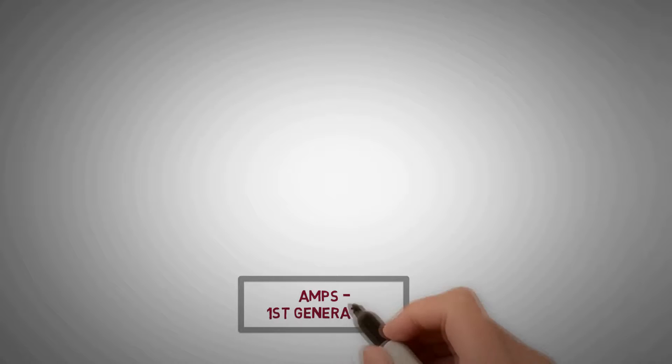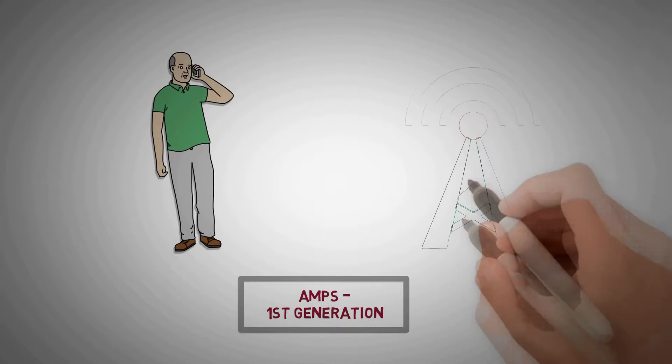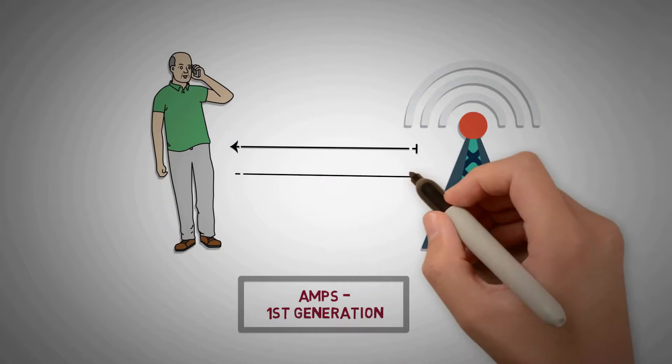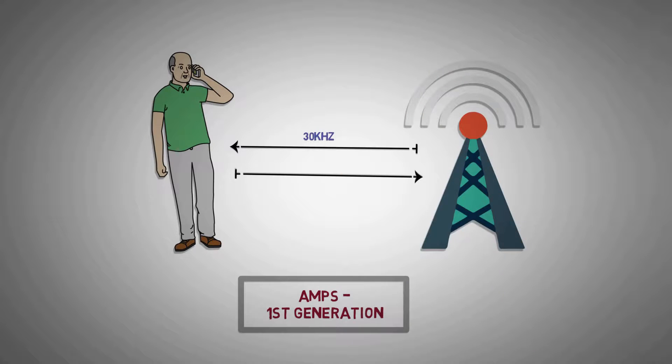AMPS or the first generation analog systems used FDMA to provide each user a duplex channel with one way bandwidth of 30 kHz.